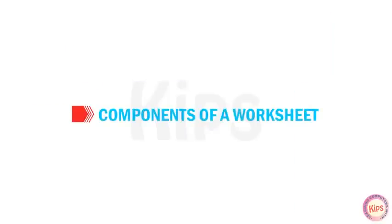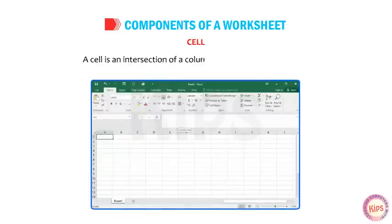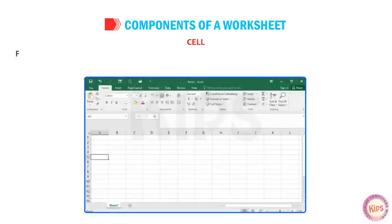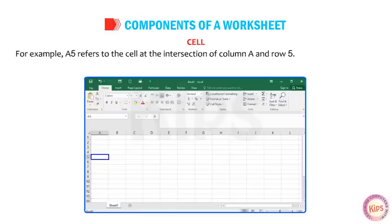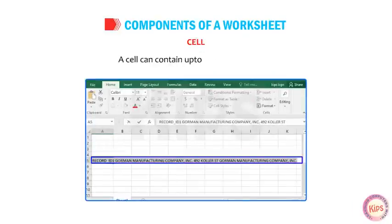Let us learn about various components of a worksheet. A cell is an intersection of a column and a row in a worksheet. Each cell is identified by its column letter and row number, which is known as the cell address. For example, A5 refers to the cell at the intersection of column A and row 5. A cell is used to store data such as text, numbers, formulas, functions, etc. A cell can contain up to 32,767 characters.